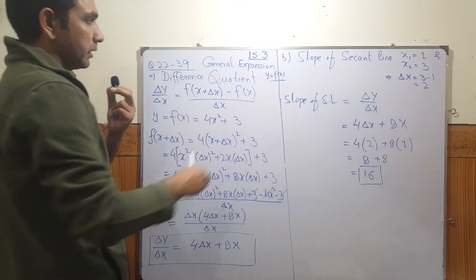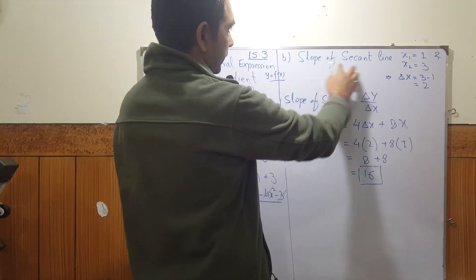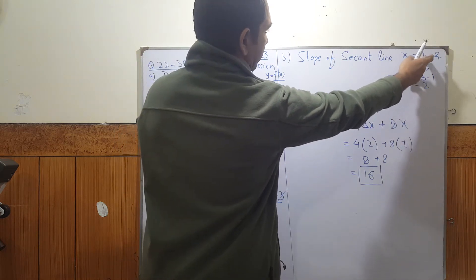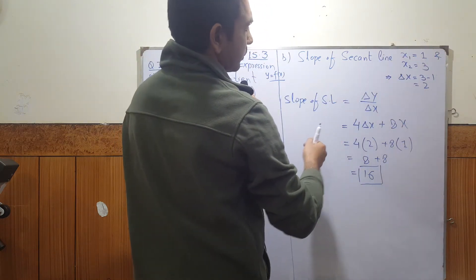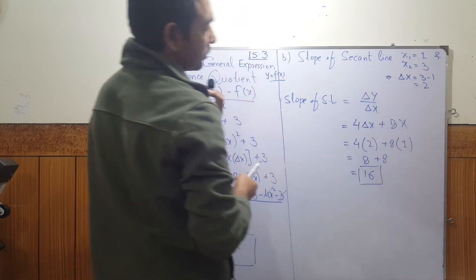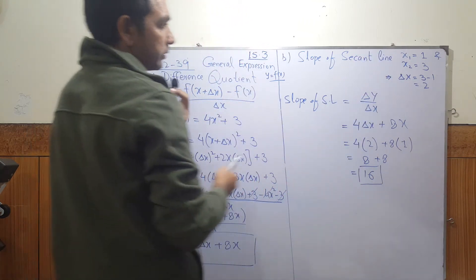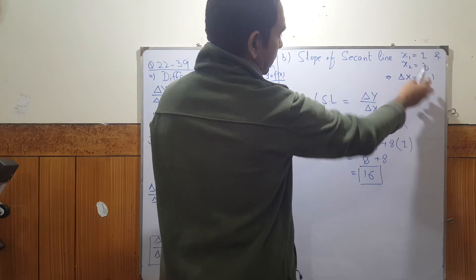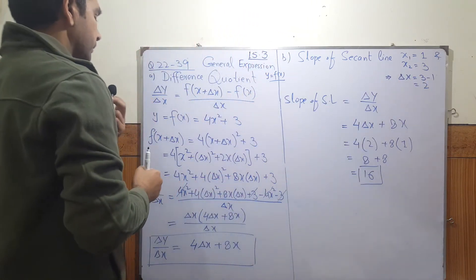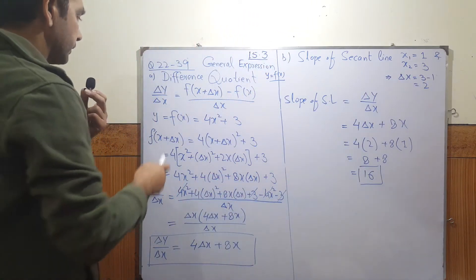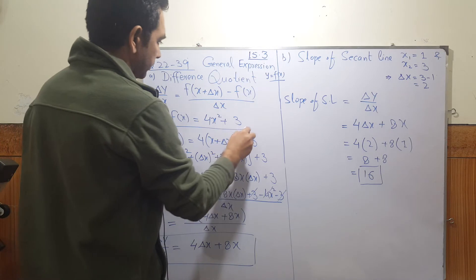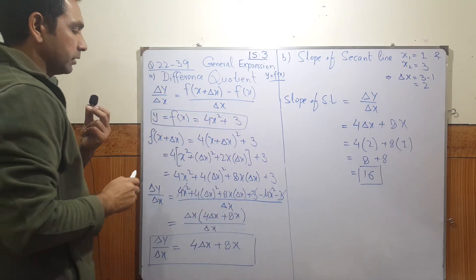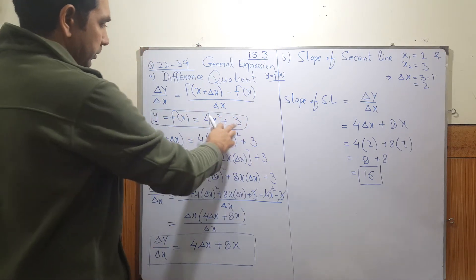In part b they're asking you to find the slope of the secant line from x1 to x3, which we call x1 and x2. The rate of change delta x is x2 minus x1, so that is 2. The function given by question 22 is f of x equals 4x squared plus 3.